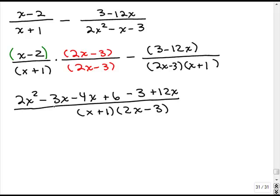Okay, so now, in the numerator, I'm going to combine the like terms. So there's only one x squared term, but I've got a negative 3x, a minus 4x, and a plus 12x. So that's going to be plus 5x. And I've got a 6 and a minus 3, that's going to be plus 3. And I'm leaving the denominator factored.